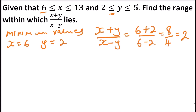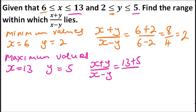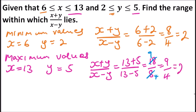The other one is the maximum value. x will take the value of 18 and y is equal to 5. So x plus y divided by x minus y equals 18 plus 5 divided by 18 minus 5, which gives you 23 divided by 13. Simplifying, this is equal to 2 and a quarter. Therefore this is the maximum value of that expression.